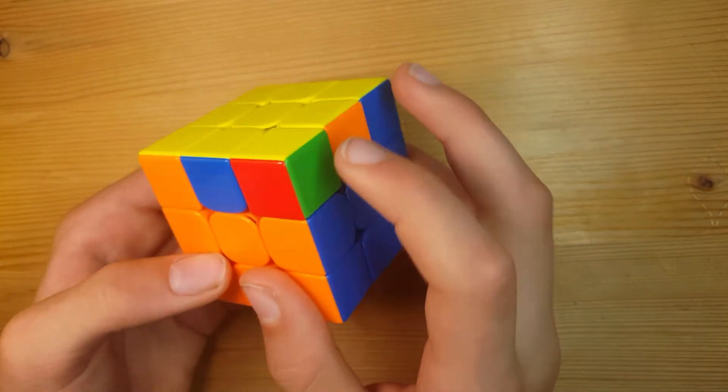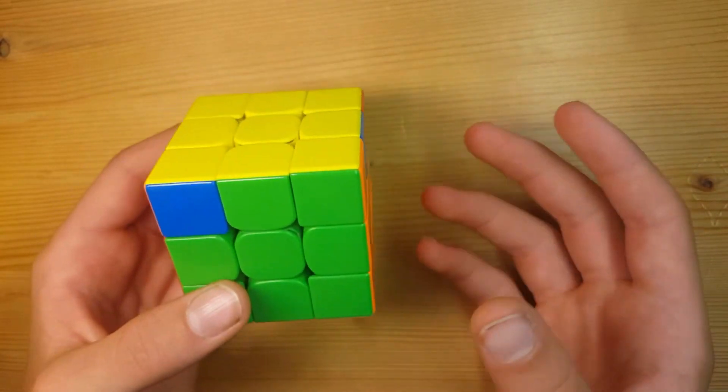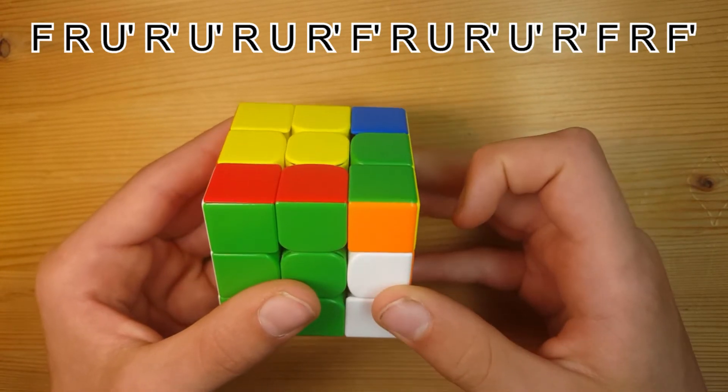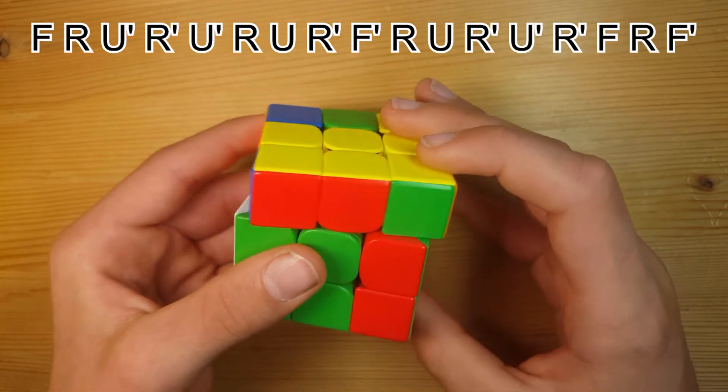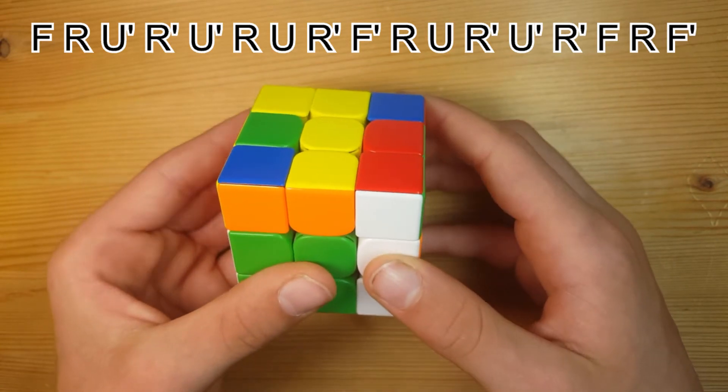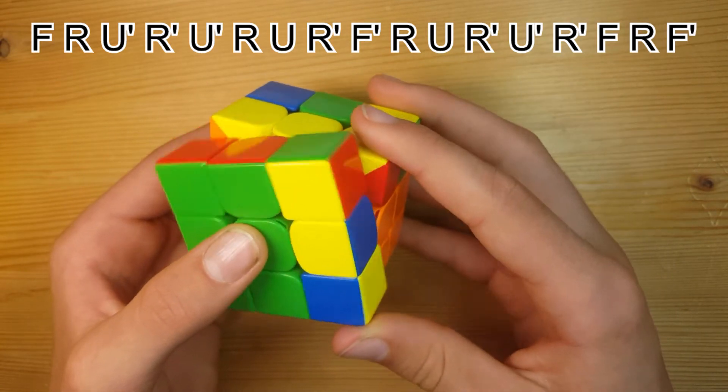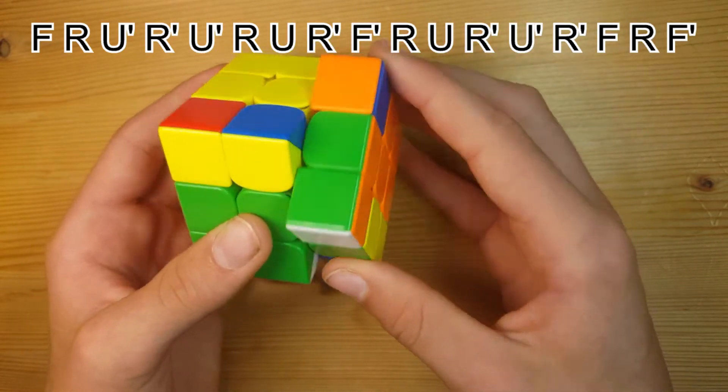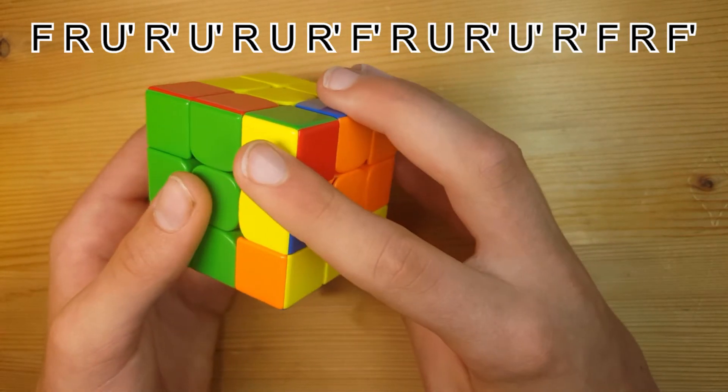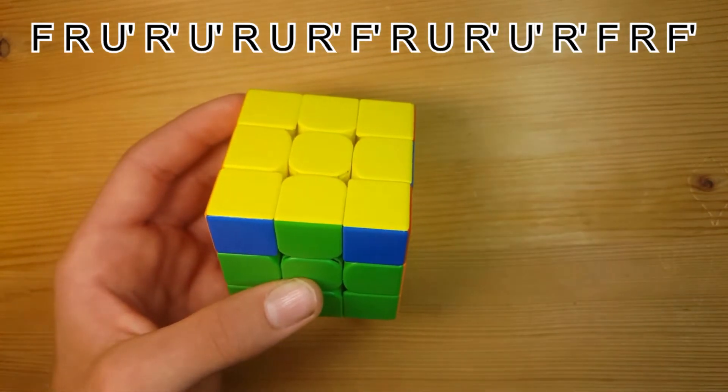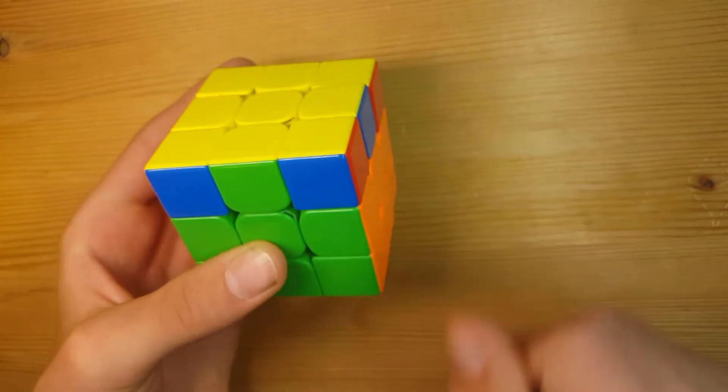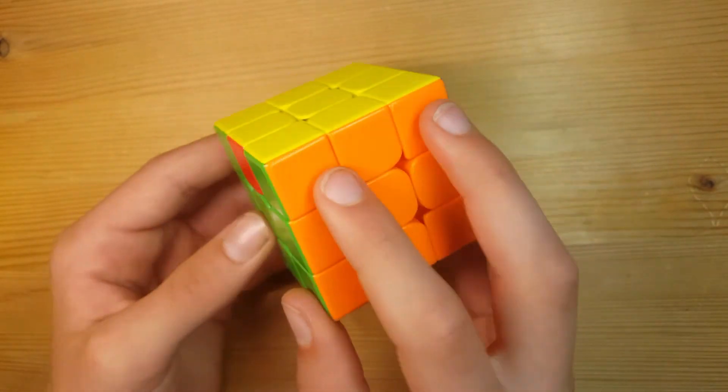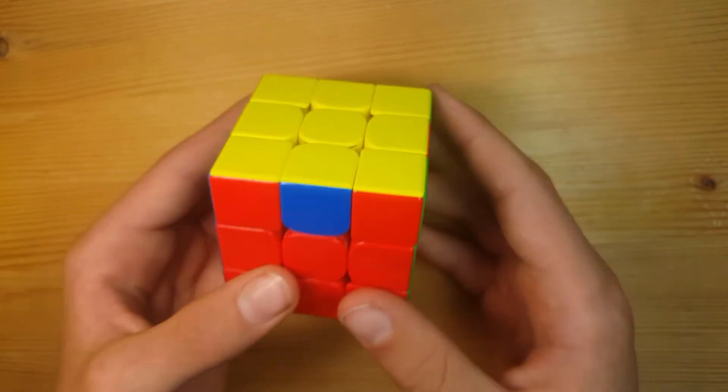If you look around and there is no set of headlights at all, then you can just do YPERM from any angle. The only other case you can get is when there are four sets of headlights. If that is the case for you, then you've already solved the corners.